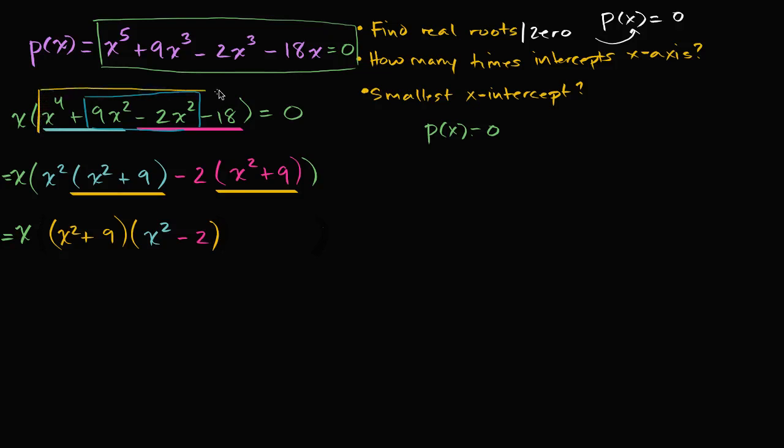This fourth degree polynomial is going to simplify to x to the fourth plus seven x squared minus 18.